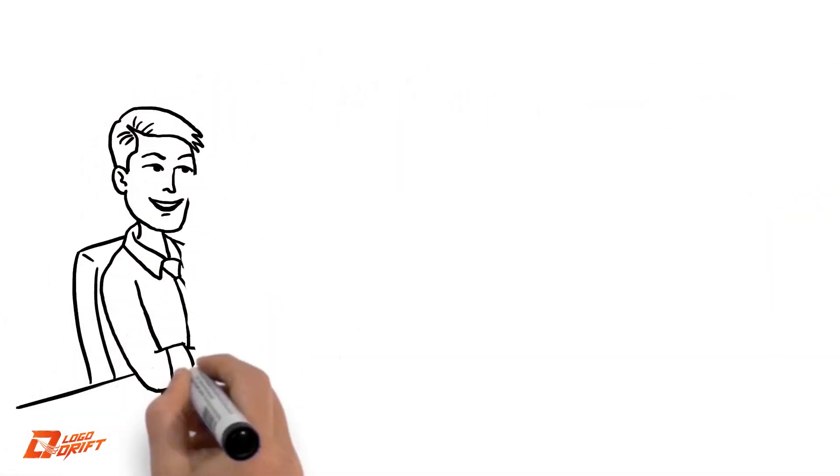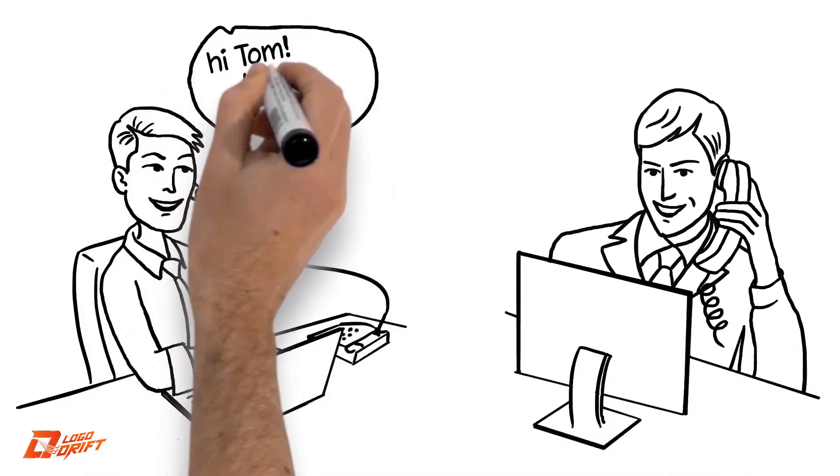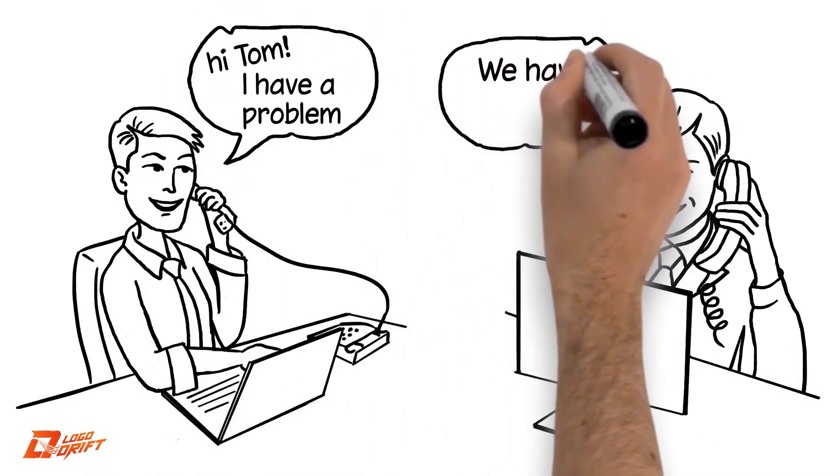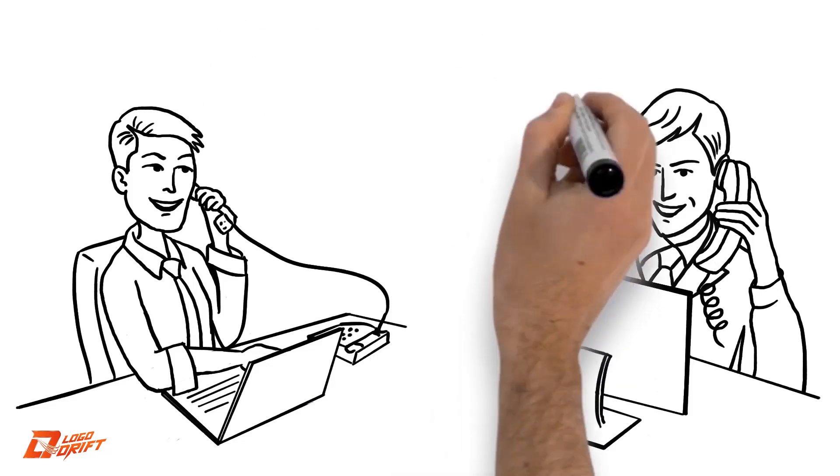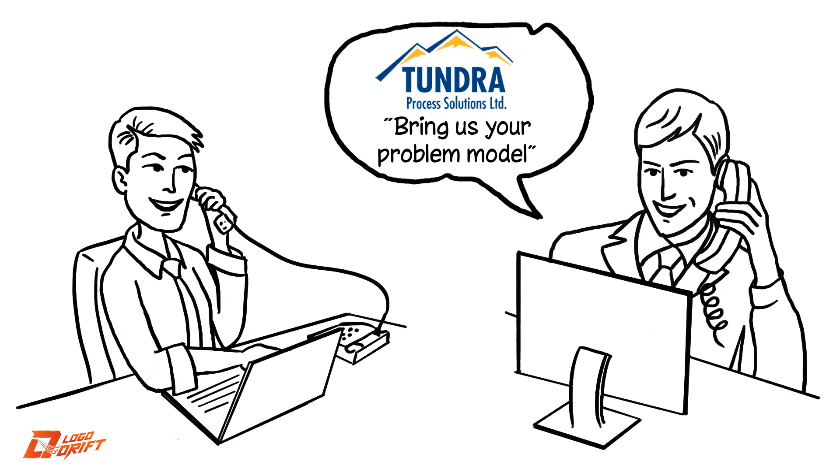Bob calls Tom at Tundra and describes his situation and receives the reply that he's been waiting for. They have a solution that fits his needs. Tom explains Tundra's Bring Us Your Problem model. Bob calls in describing his problem.